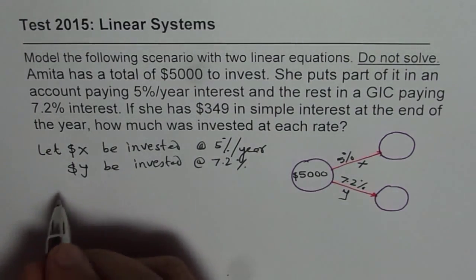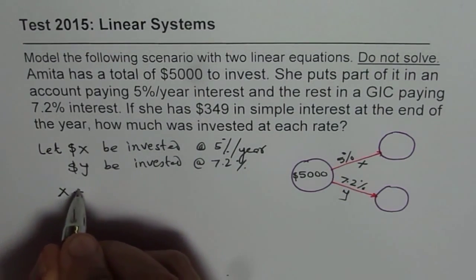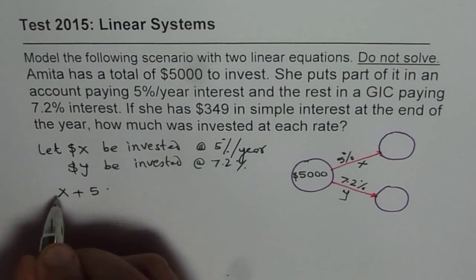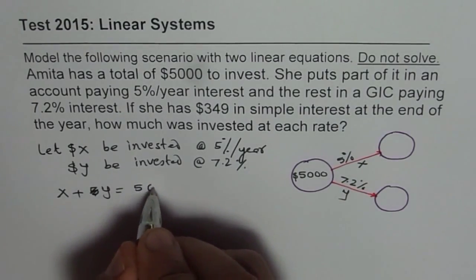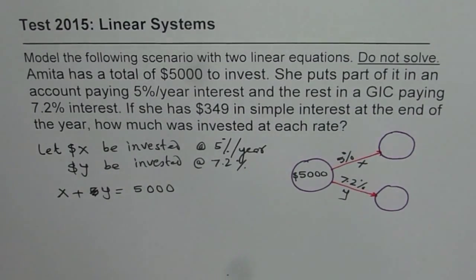From here we can get first equation. That is X plus Y is equals to 5000. That is the total amount.